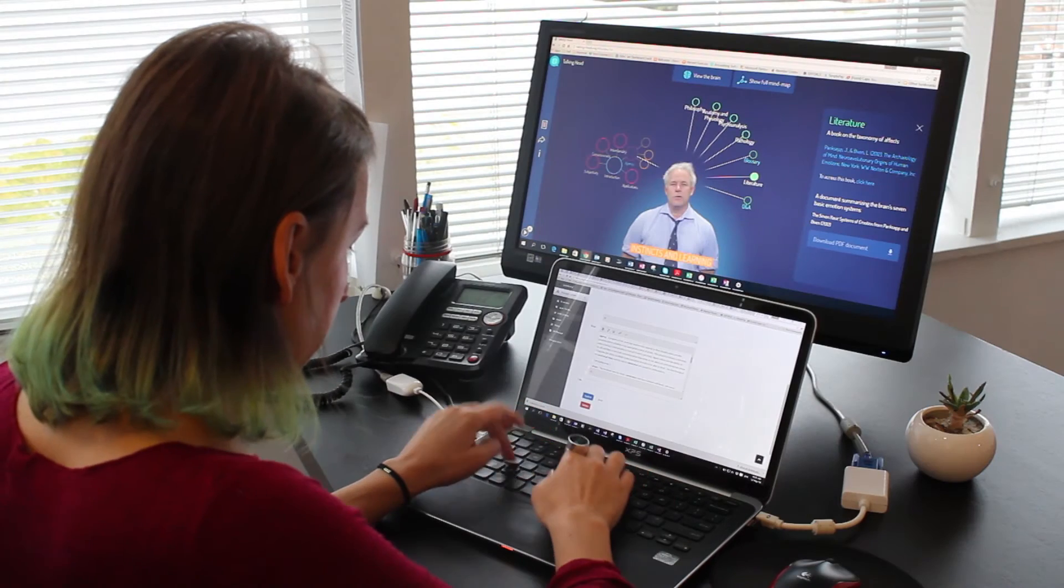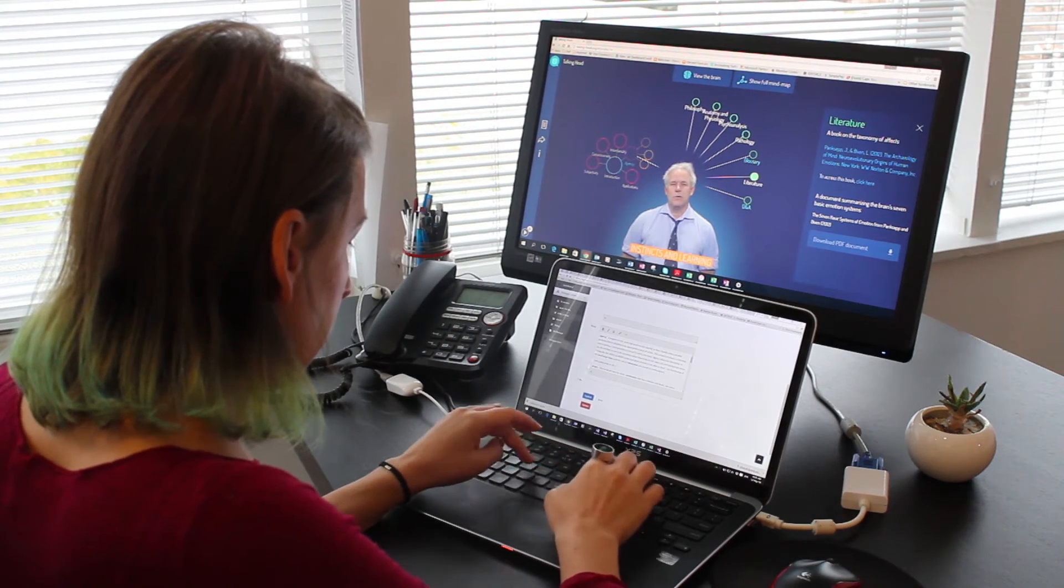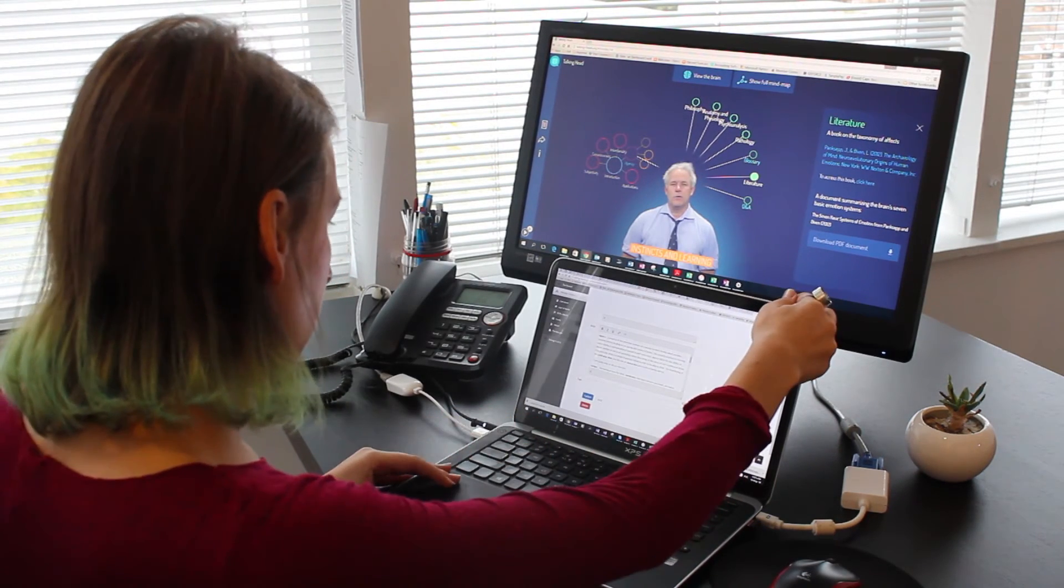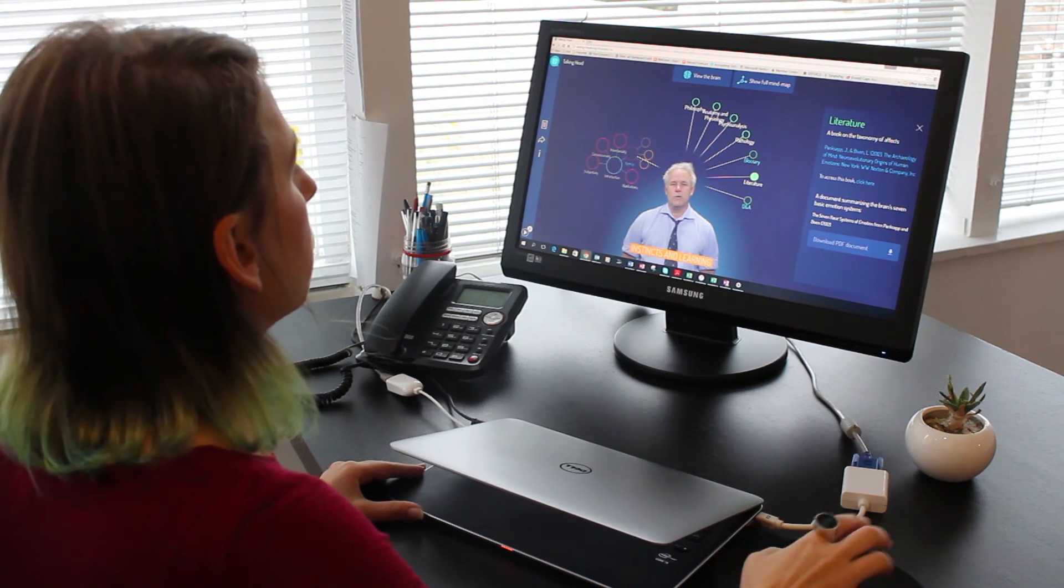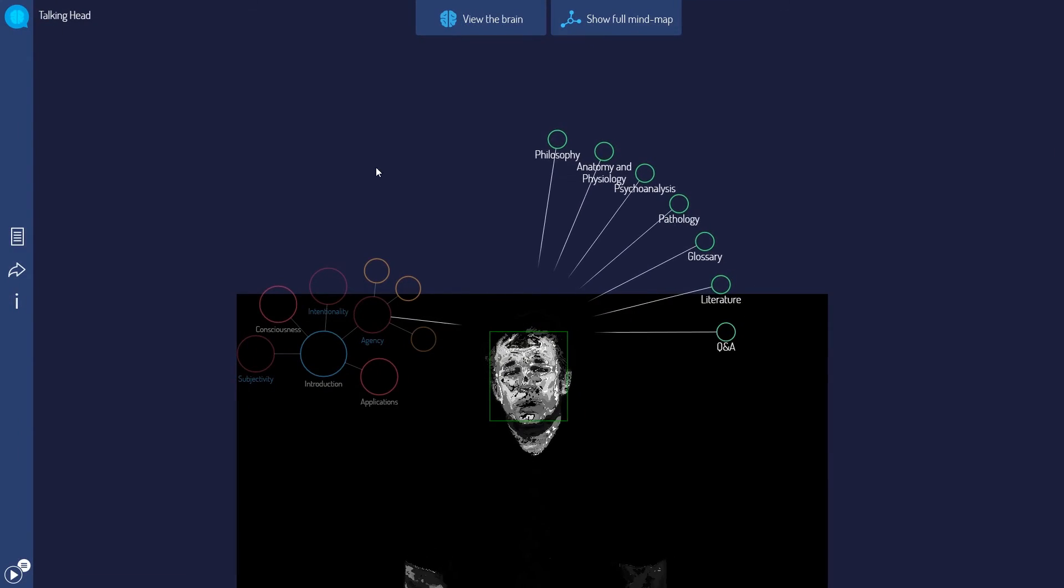UCT researchers can add or change media through a custom-built CMS, while the sophisticated vision head tracking technology ensures the mind map will be correctly positioned, even if video content changes.